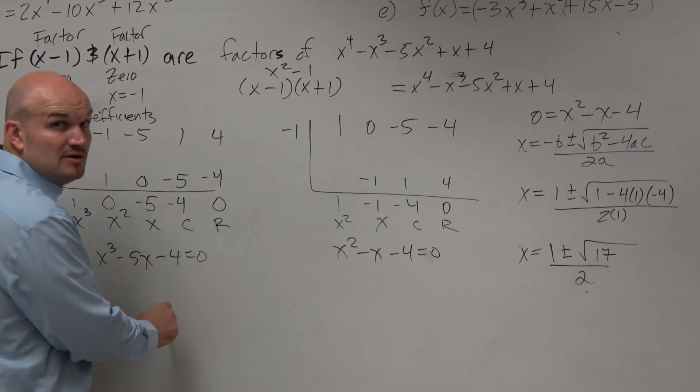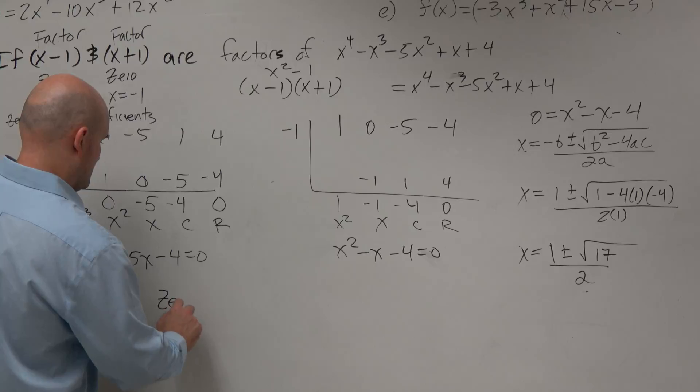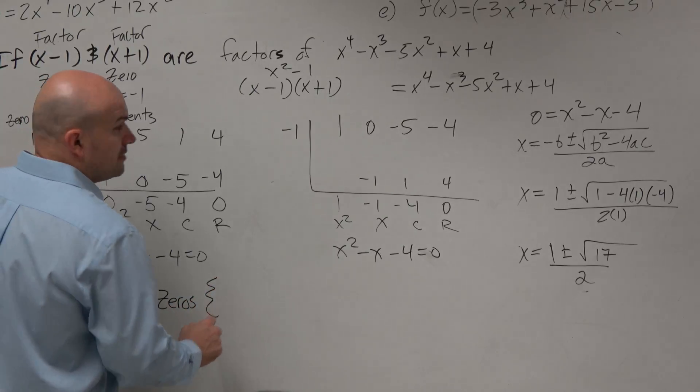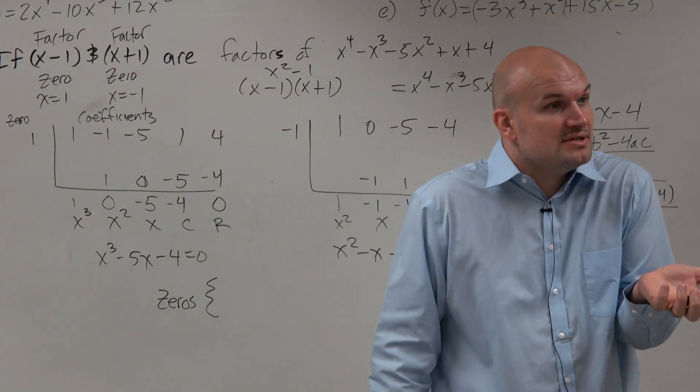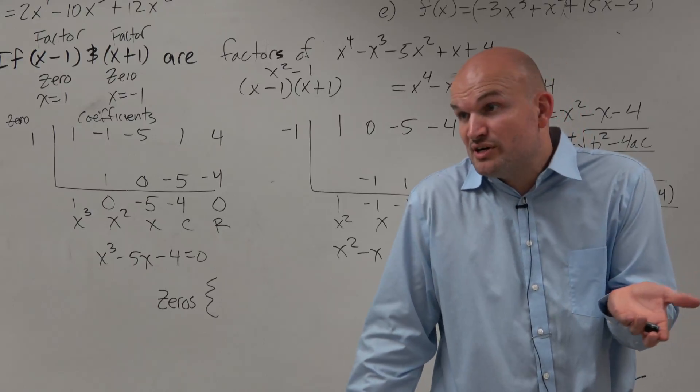So if I wanted to write my 0's, were we already given two 0's? Basically, we were given two factors, right?